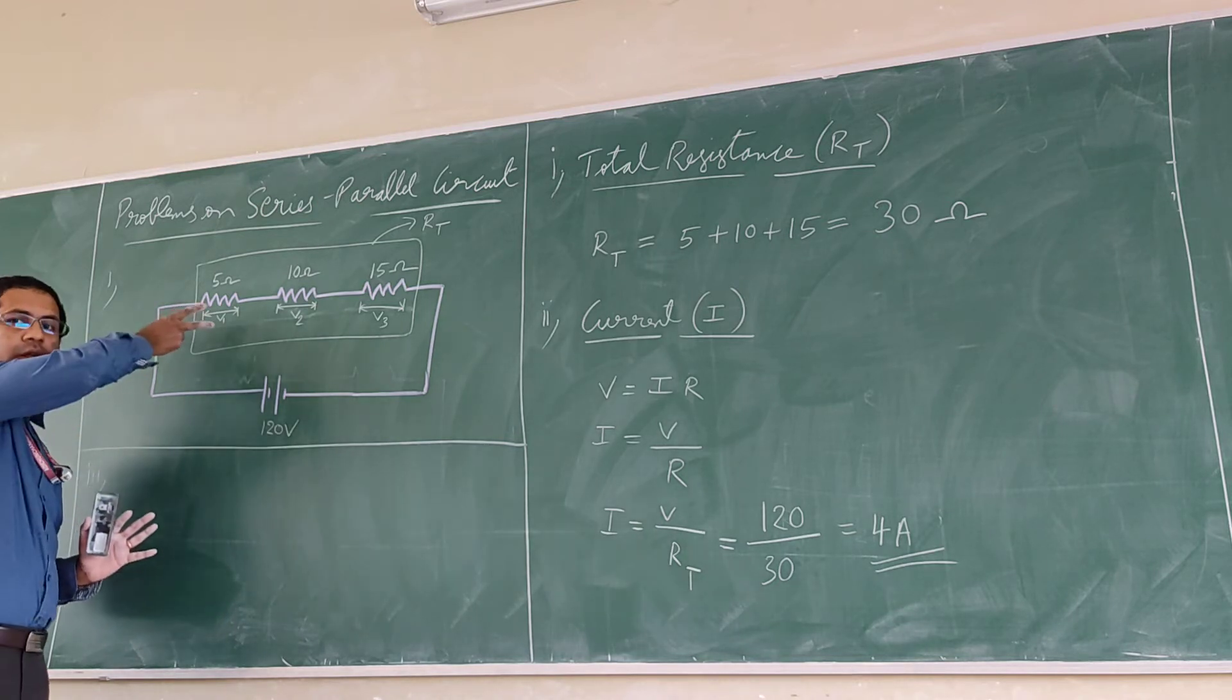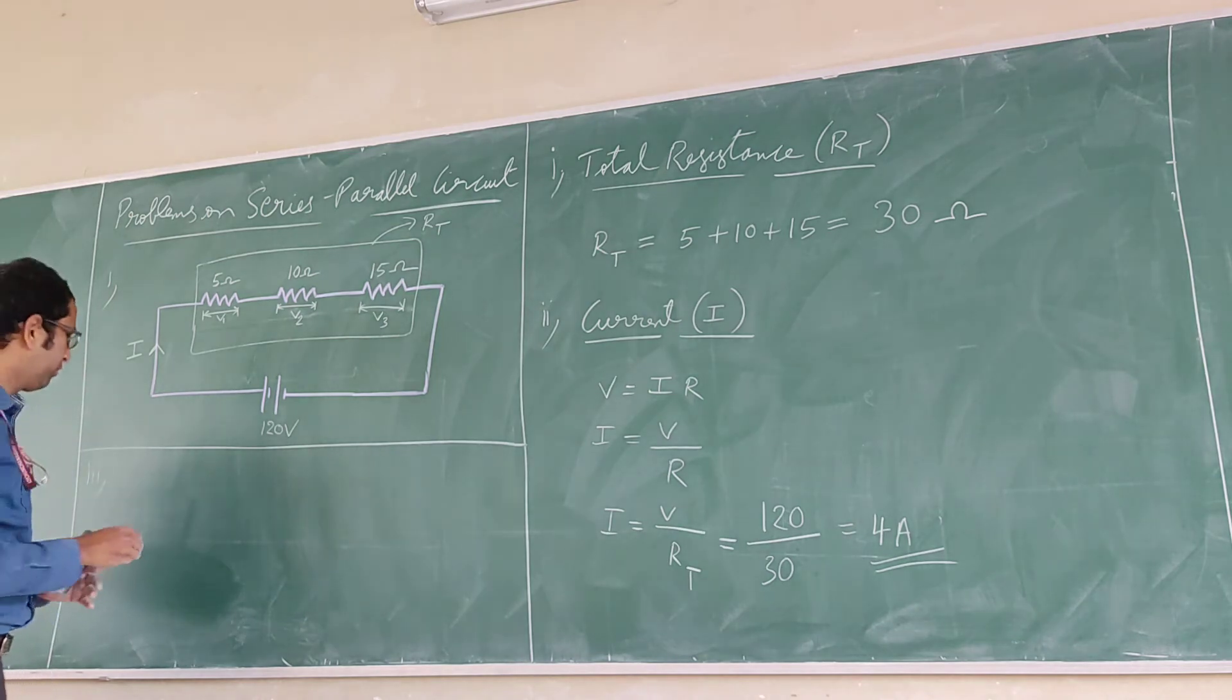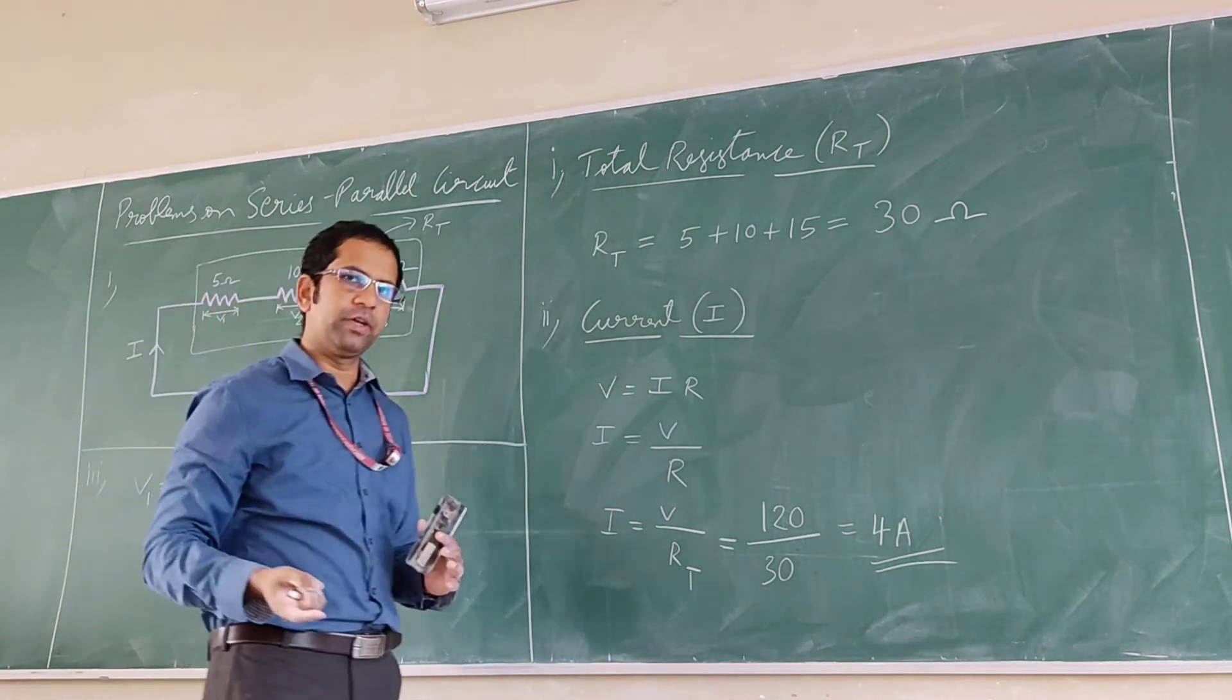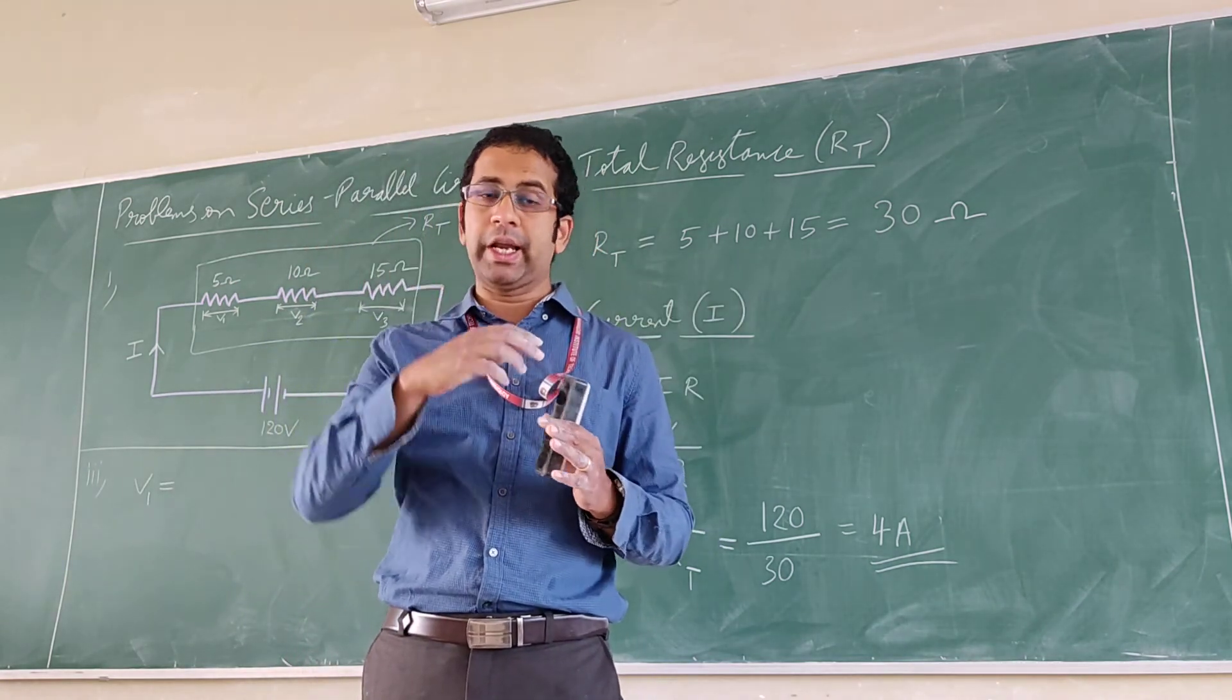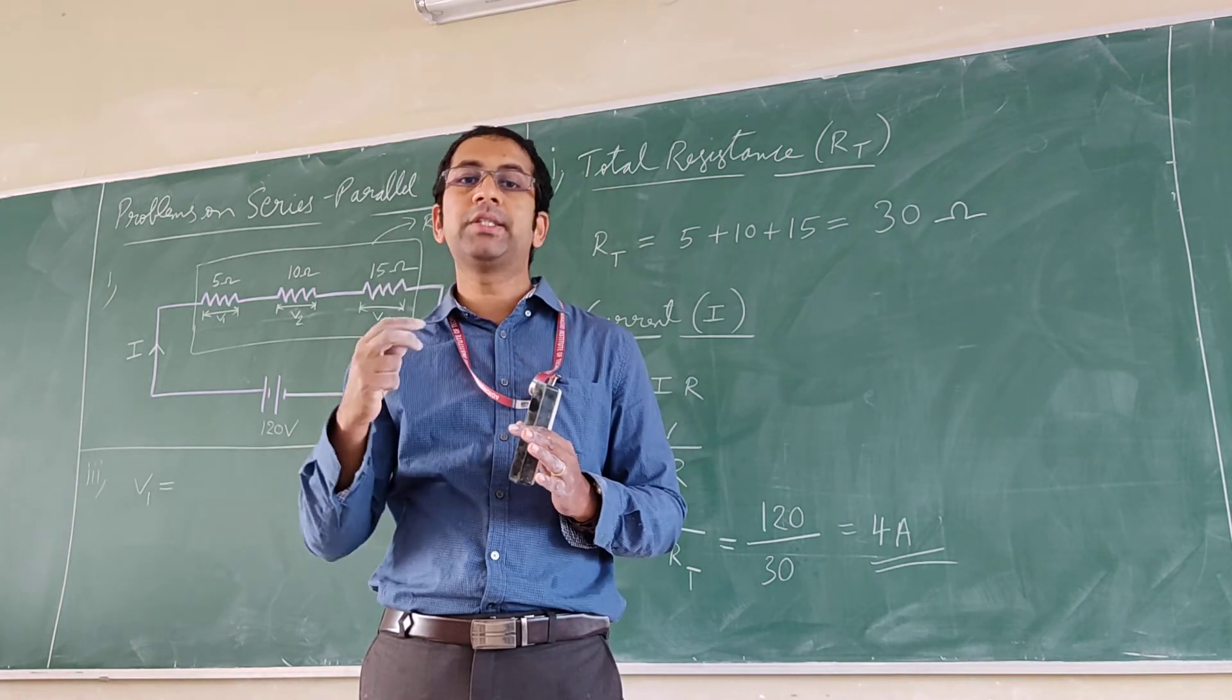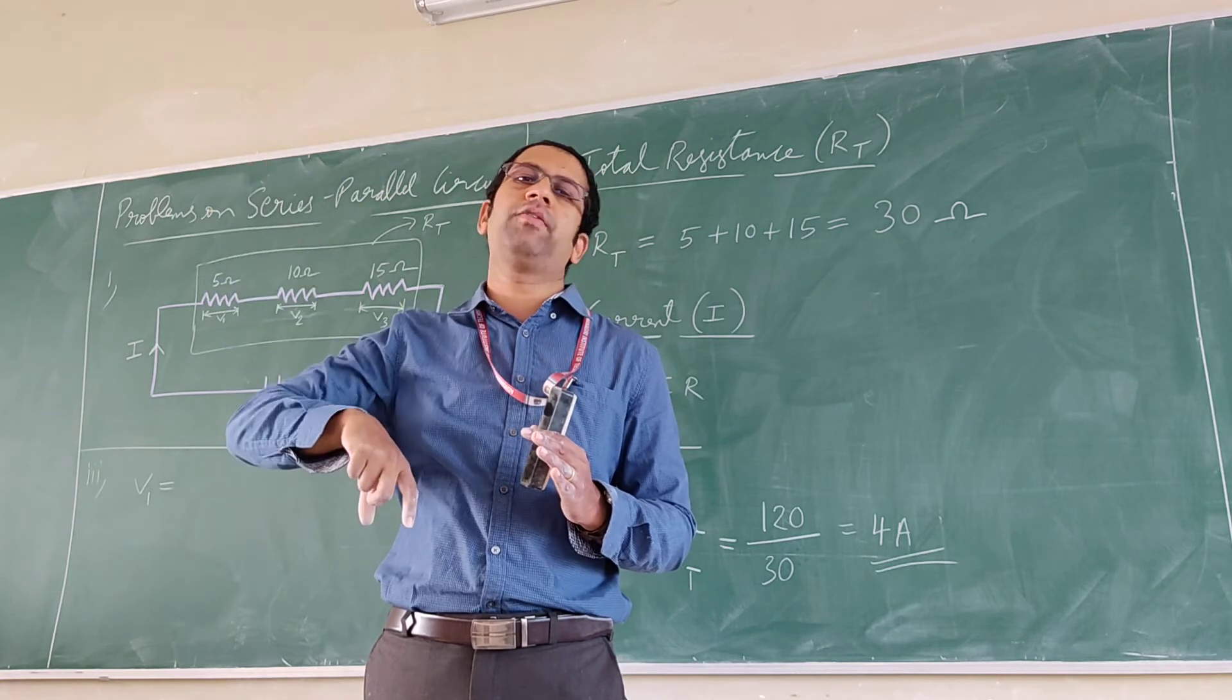Voltage across resistance. If you remember the voltage divider rule - again I am talking series circuit - the voltage across a particular resistor is the ratio of that value of the resistor to the total value of the resistor into total voltage.